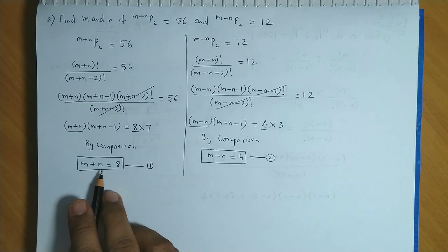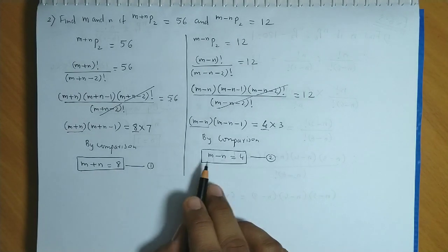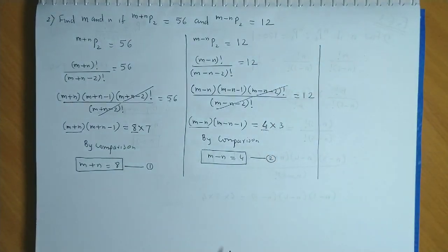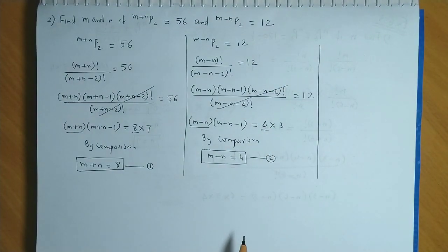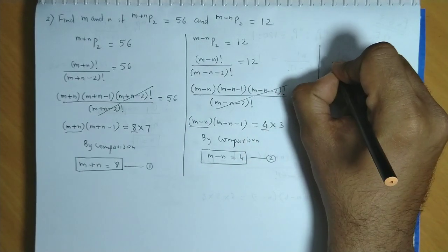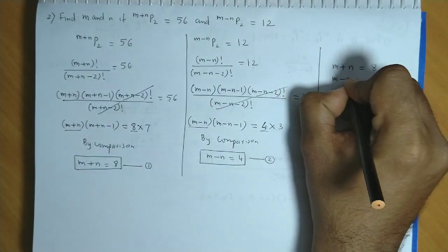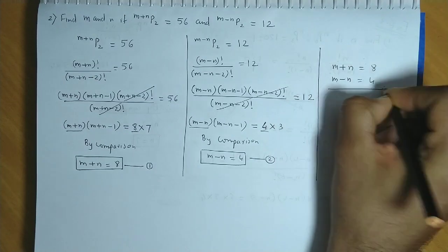So the first equation is m plus n equals 8. Second is m minus n equals 4. Now if we solve these two equations simultaneously, we can easily get the values of m and n. So let us add the two equations. m plus n equals 8 and m minus n equals 4.